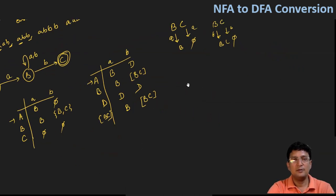So A is the start state. Yes, one thing more: you should mention the final state. The final state was C in the NFA, so the final state will be BC because it contains C.